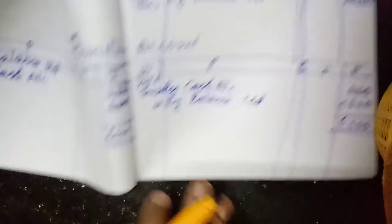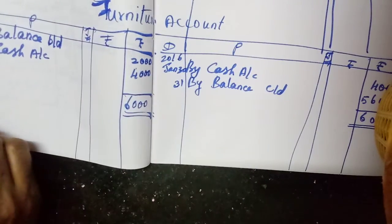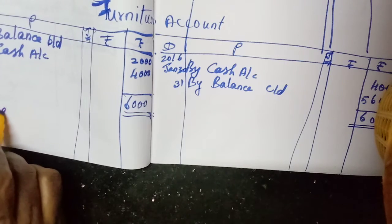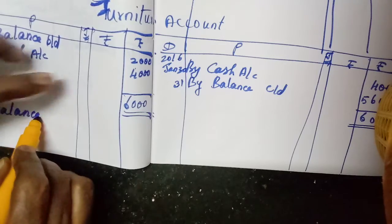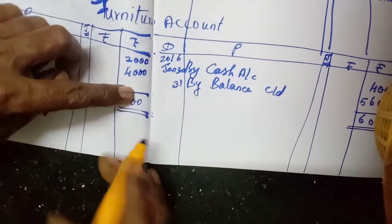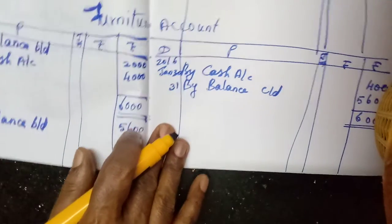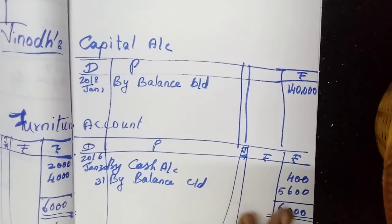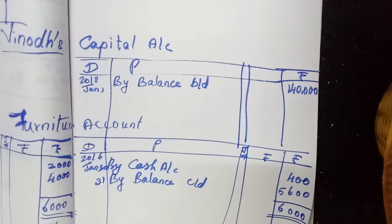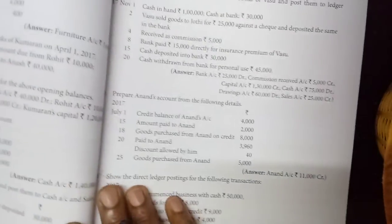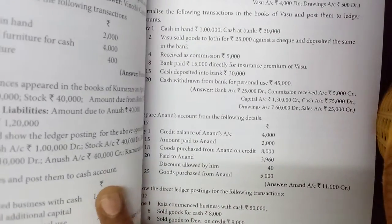Next date: February 1 — to balance brought down 5,600. The account shows a closing balance of 5,600.